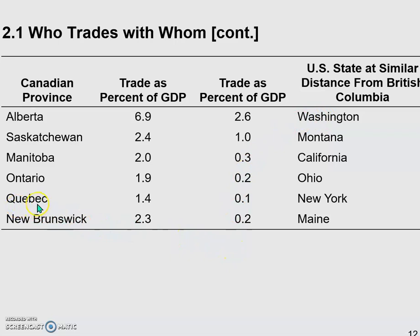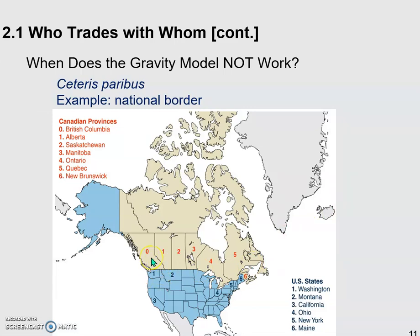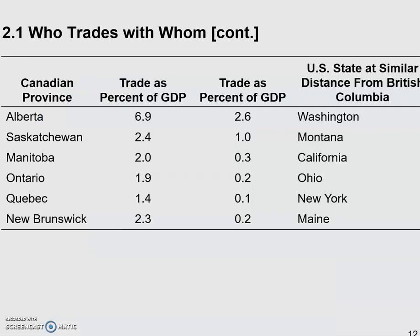Another example: Quebec is an eastern province in Canada. The distance between British Columbia and Quebec is approximately the same as that between British Columbia and New York. You can find that British Columbia is here, Quebec is number five here, and New York state is here — their geographic distance is similar, but their trade volume is quite different. Trade between Quebec and British Columbia accounts for 1.4% of GDP, but only 0.1% — one-tenth of a percentage point — between British Columbia and New York.